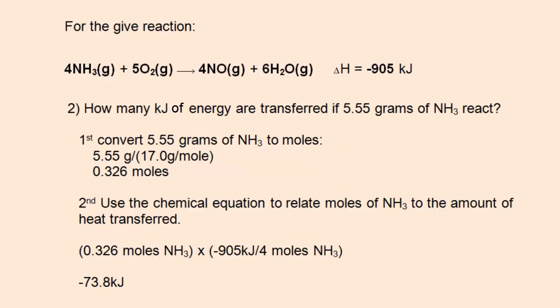Then use the chemical equation to get the proportion of 905 kilojoules per 4 moles of ammonia. Set it up using dimensional analysis and you'll get negative 73.8 kilojoules of heat.